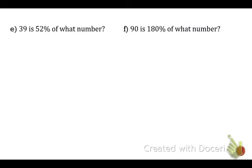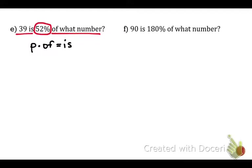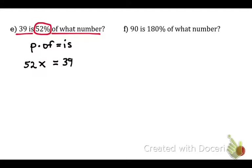Problem E: 39 is 52% of what number? Circle and underline the three different parts. Formula: p times of equals is. Plug in: we don't know the of, so put an x. The is is 39.